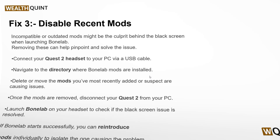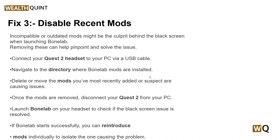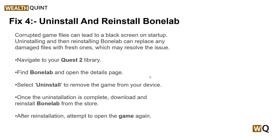The third step is to disable or remove mods. Incompatible or outdated mods might be the culprit behind the black screen when launching BoneLab. Connect your Quest 2 headset to your PC via USB cable, navigate to the directory where BoneLab mods are installed, and delete or move the mods you most recently added that you suspect are causing the issue. Once the mods are removed, disconnect your Quest 2 from the PC and launch BoneLab on your headset to check if the black screen issue is resolved. If BoneLab starts successfully, you can re-add mods individually to isolate the one causing the problem.